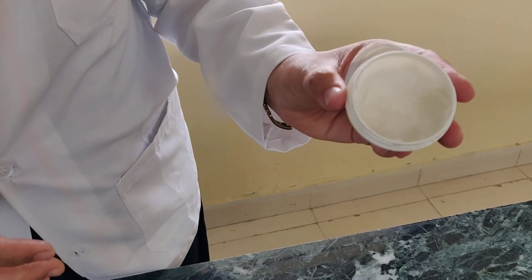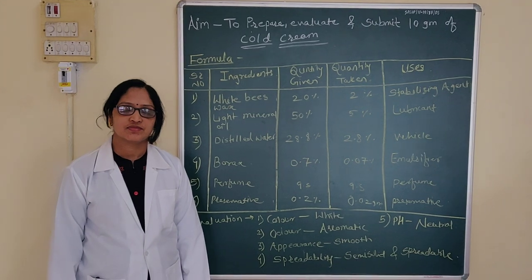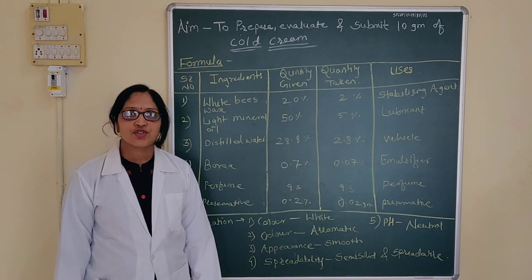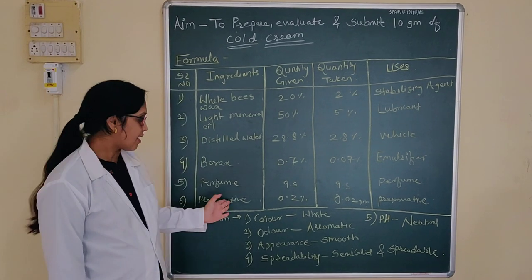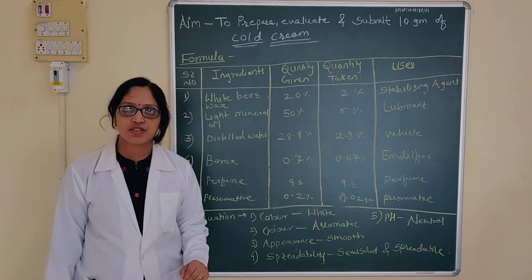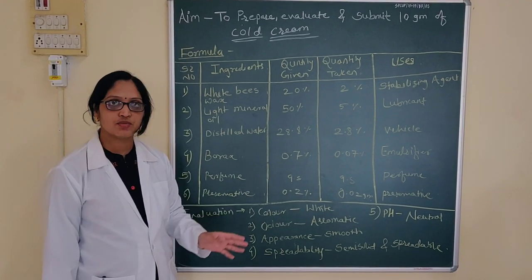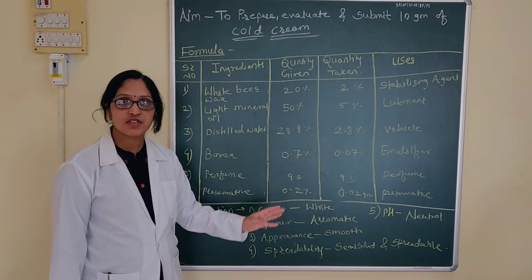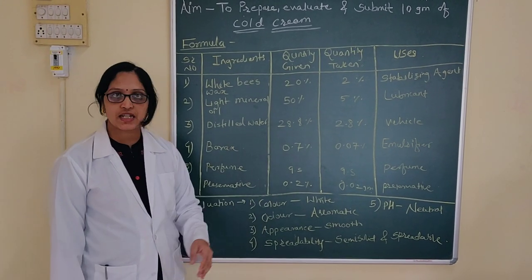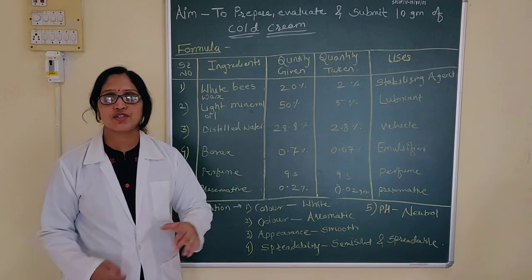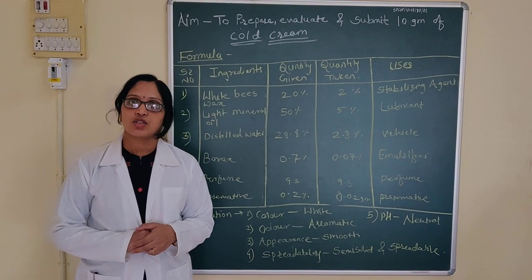Now we will see the evaluation parameters on the board. We have seen how to prepare the cold cream. The evaluation parameters for cold cream are: color, odor of the formulation, appearance — which was very smooth — spreadability, which was very good, and pH. In this way, we have prepared cold cream today.